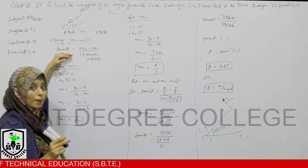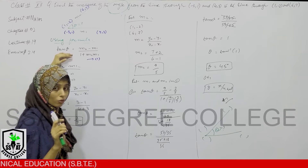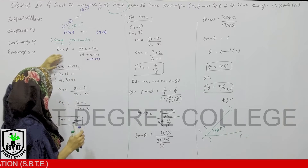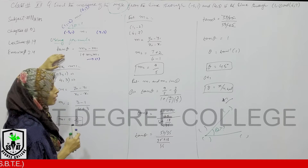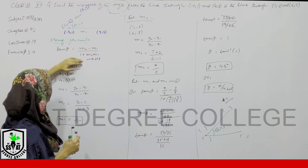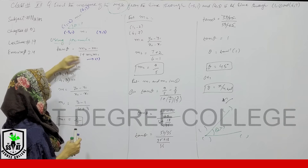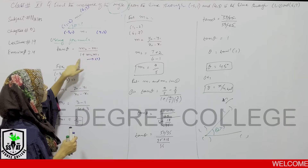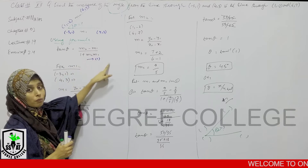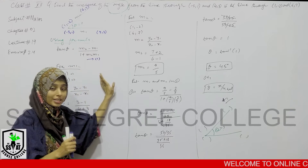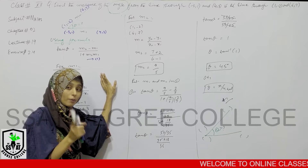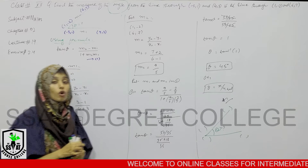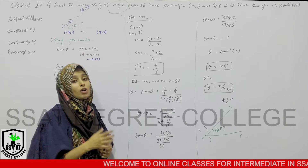Let's look at the formula. What was the formula? I wrote the formula. Now when I look at the formula, what is required? M1 and M2. What are M1 and M2? They are slopes. Where do we get the slopes?